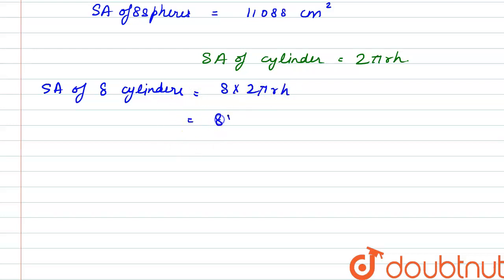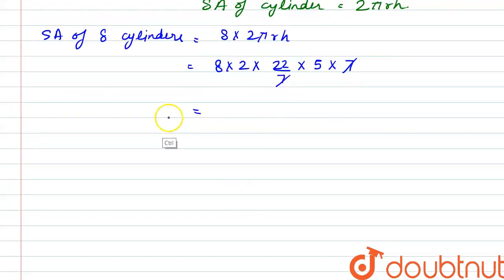So this comes out to be 8 multiplied by 2 multiplied by π is 22 by 7 multiplied by r is 5 and h is 7. So 7 divides 7 here. So we have the surface area of 8 cylinders as 1760 cm².